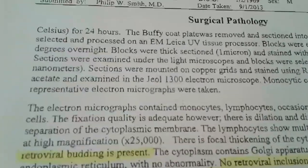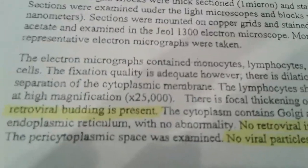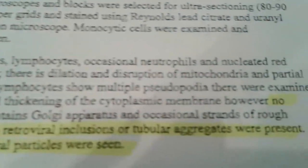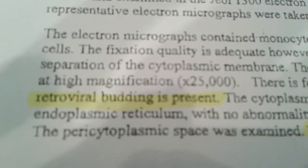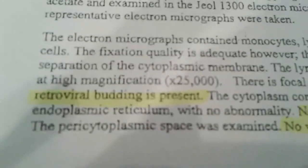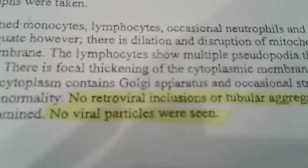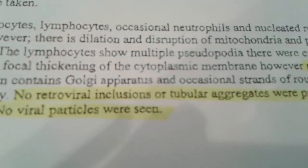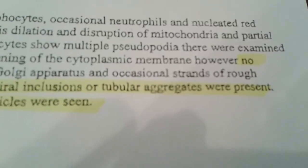But if you still don't believe this, on the second page of the pathology report, we have here — see highlighted there — no retroviral budding is present. Retroviruses are the scientific term for HIV. So there was no retroviral budding present. And again, here it says no retroviral inclusions or tubular aggregates were present. So no retroviruses were present.